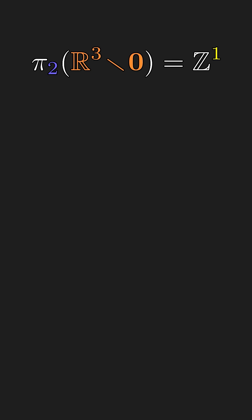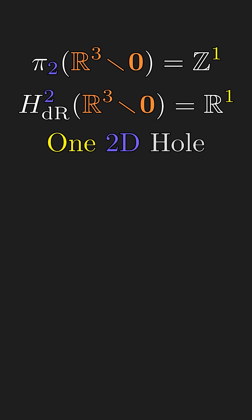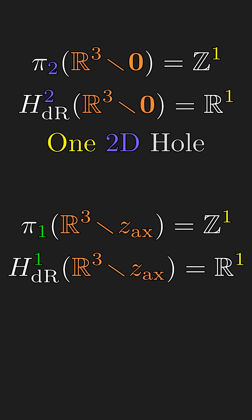So, counting non-contractable spheres and counting divergences that are not curls both capture the same number of two-dimensional holes. And counting non-contractable circles and counting curls that are not gradients both capture the same number of one-dimensional holes.